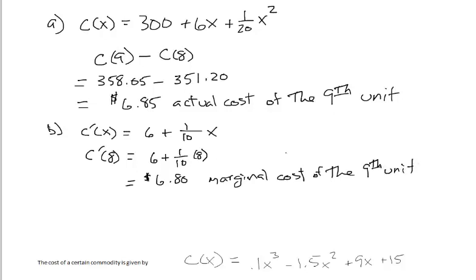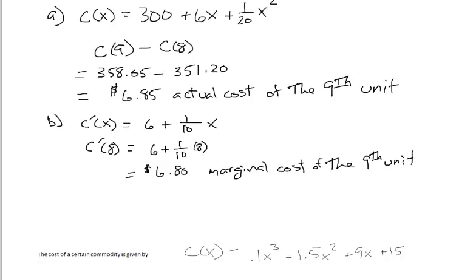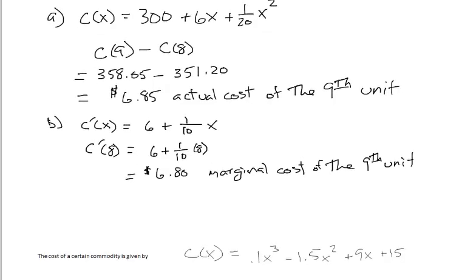You can see that they're close. Just remember that in part a we found the actual cost — so that's an exact value. When we're using marginal cost, this is a predicted cost. So we're predicting it will be $6.80 to make that 9th unit, when in reality it was $6.85. But they should be relatively close. So that's marginal cost.